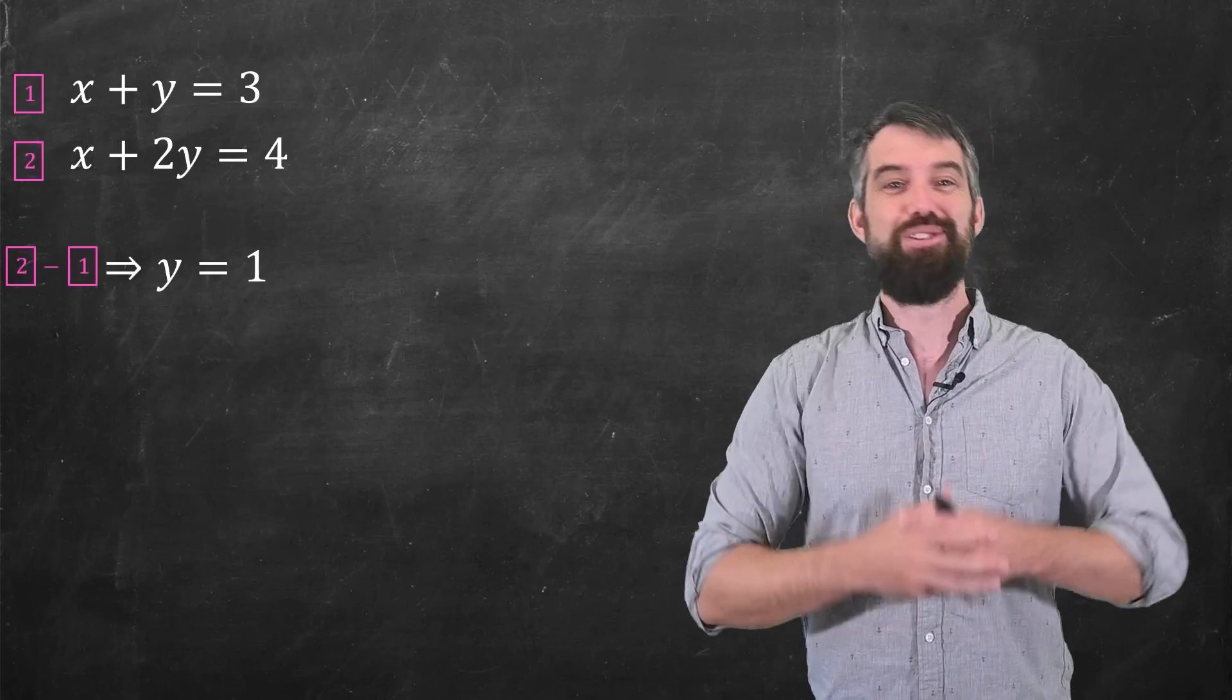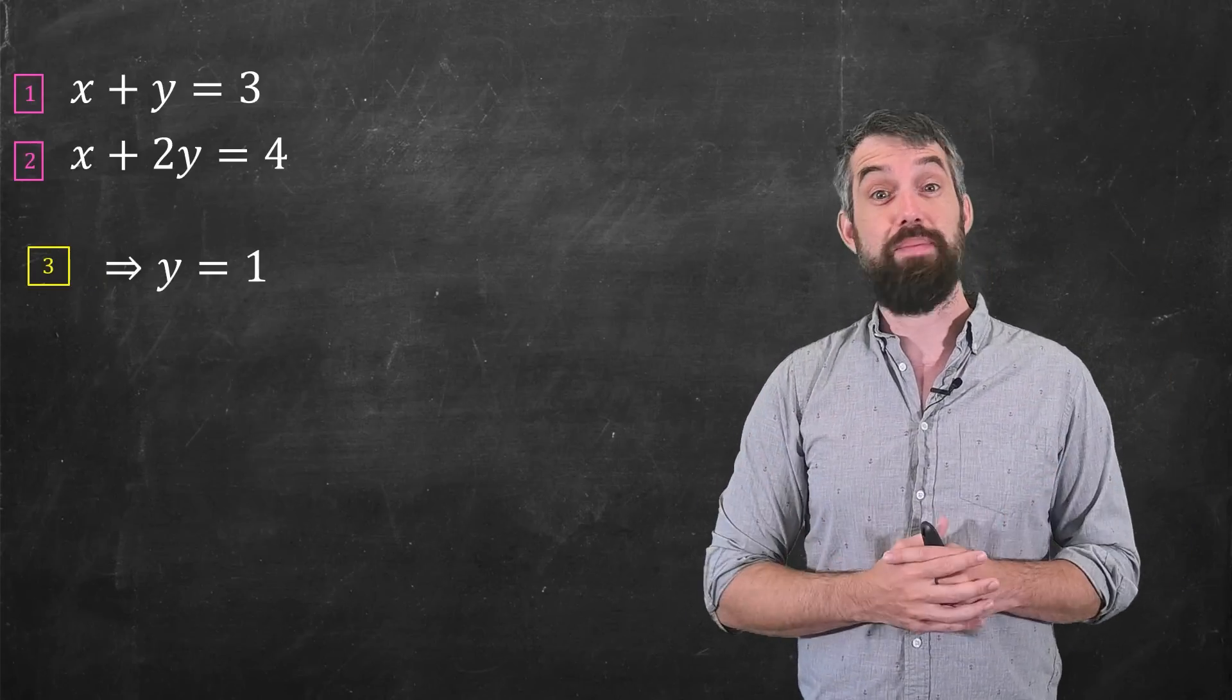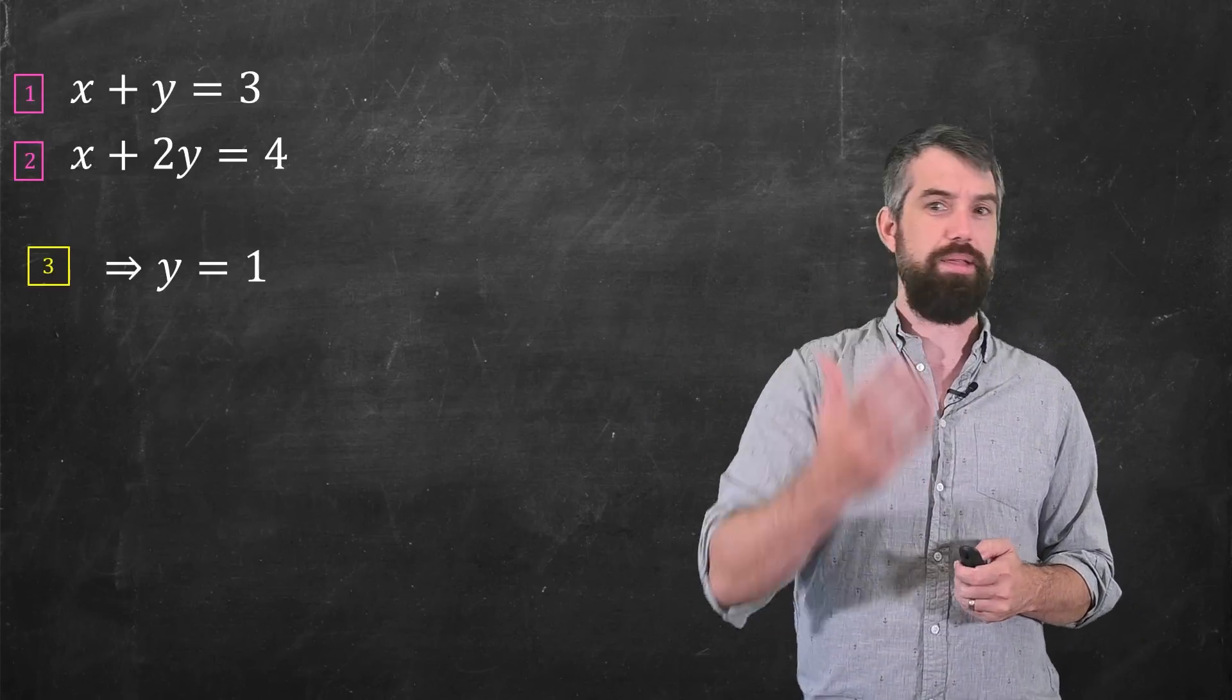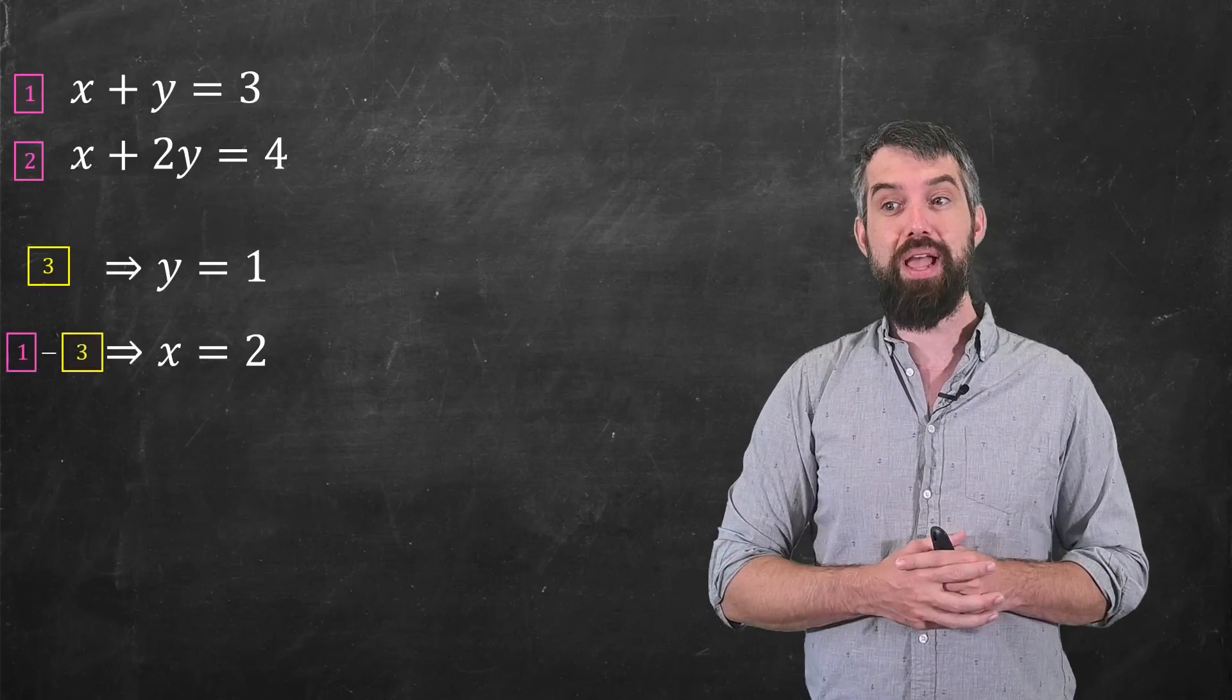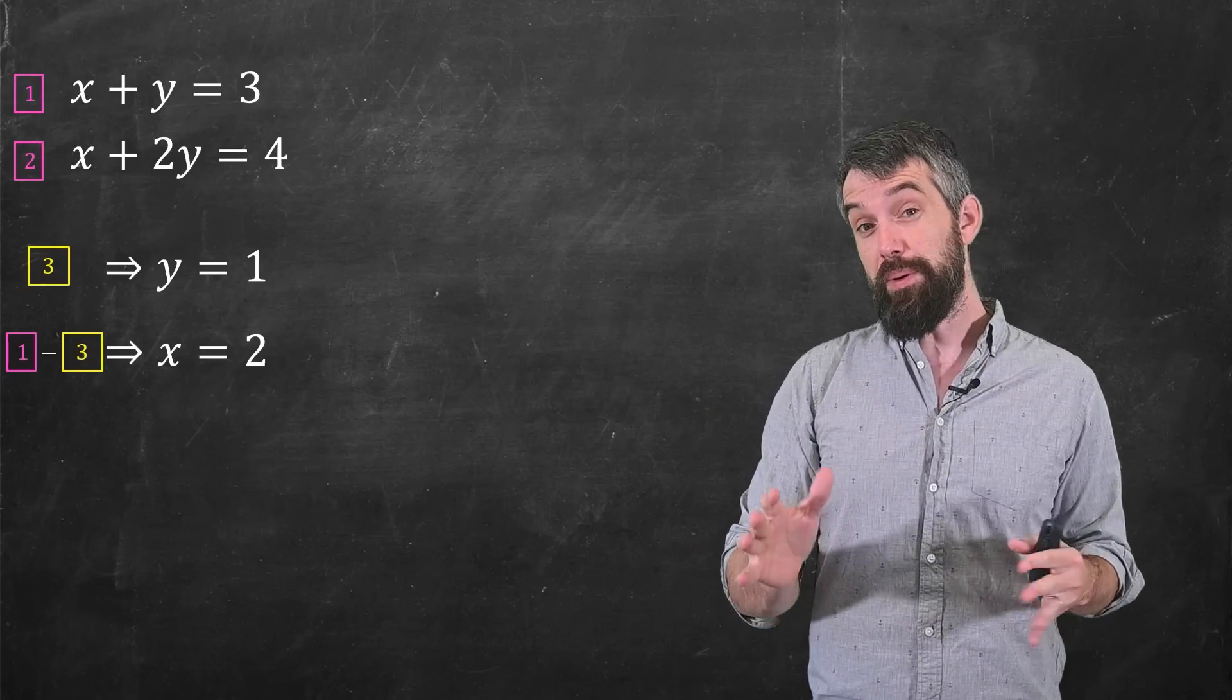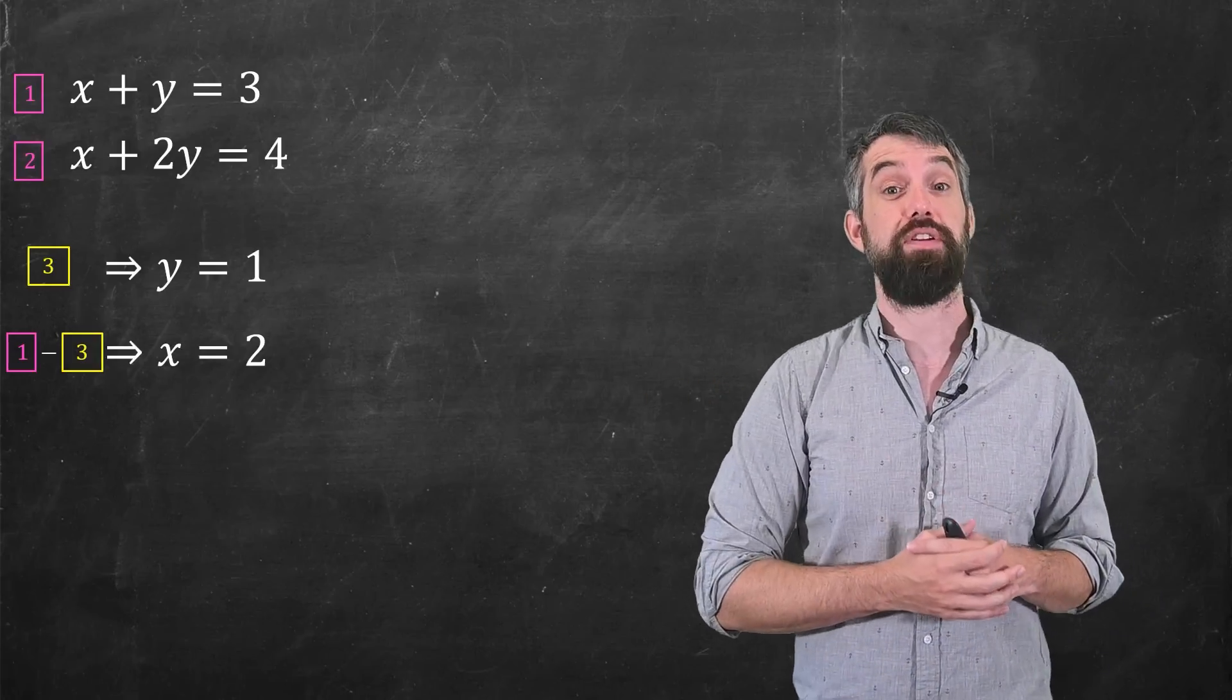You could substitute this back into either of these equations to get the value of x. In an effort to be a bit more systematic, I'm going to relabel this as equation 3, and note that if I take equation 1 and I subtract off my equation 3, then I'm just left with x equal to 2. Nothing fancy, but let's track what's happening geometrically as I do these two different steps.